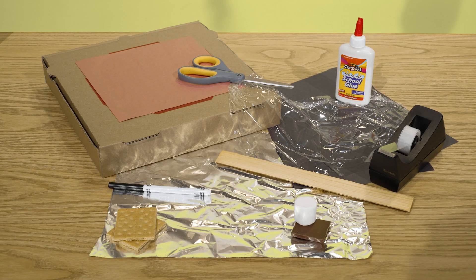To make your solar oven you'll need one clean dry pizza box, aluminum foil, clear colorless plastic wrap, black construction paper, glue, tape, scissors, a ruler, markers or crayons, graham crackers, chocolate, and marshmallows.